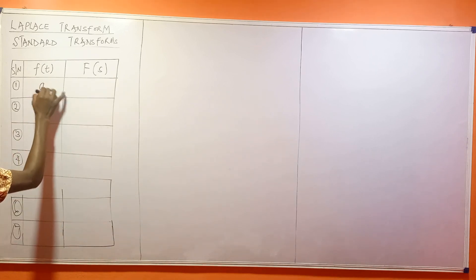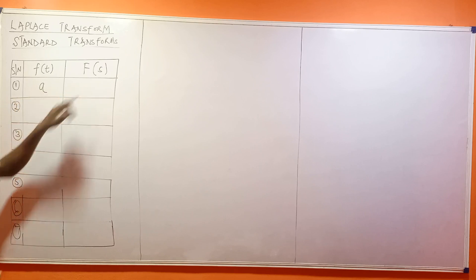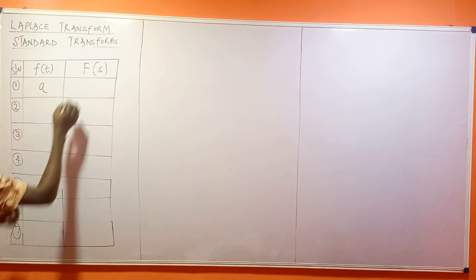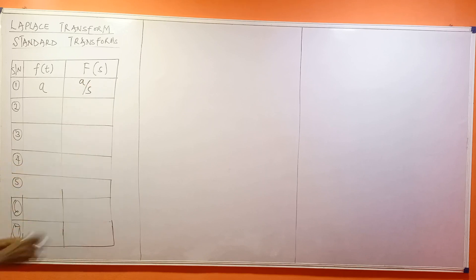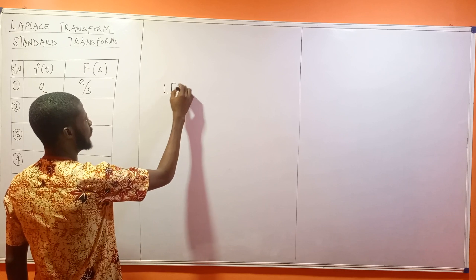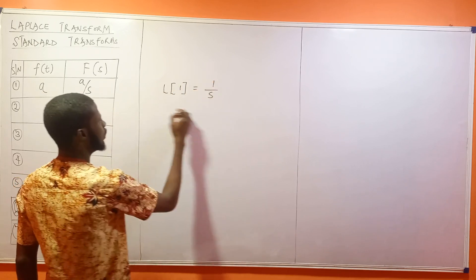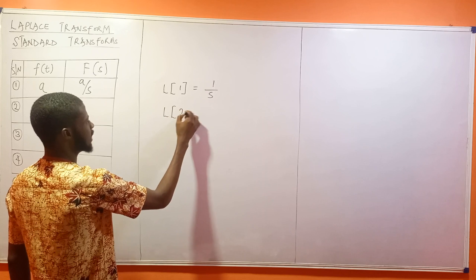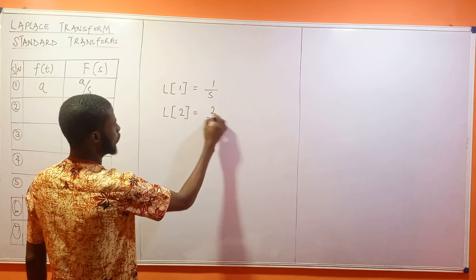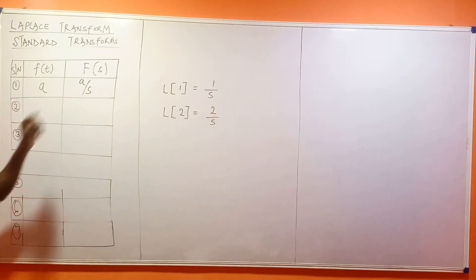The first one is a constant A. If you take the Laplace transform of a constant A, the result is going to be A over S. So what does this tell you? If you have the Laplace transform of 1, your answer is 1 over S. If you have the Laplace transform of 2, your answer is 2 over S.